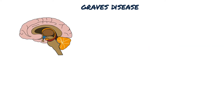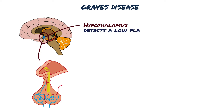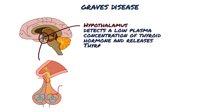Thyroid hormones are released as part of the hypothalamic pituitary thyroid axis. The hypothalamus detects a low plasma concentration of thyroid hormone and releases thyrotropin-releasing hormone, or TRH, into the hypophysial portal system.